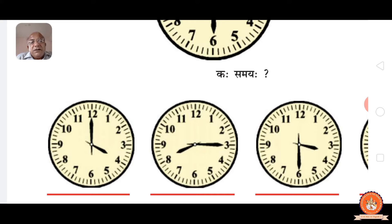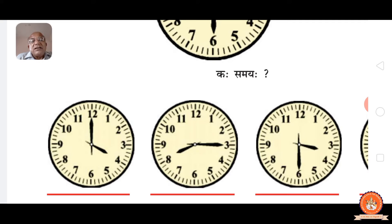Number four: it is called half past three or thirty minutes past three. In Sanskrit it is called sardh tri vadanam. Sardh means half past, tri means three — so sardh tri vadanam means thirty minutes past three or half past three.